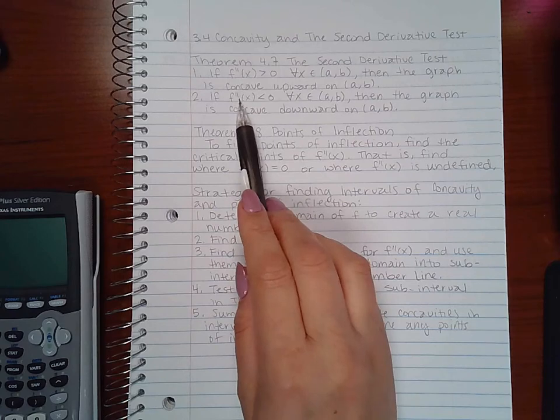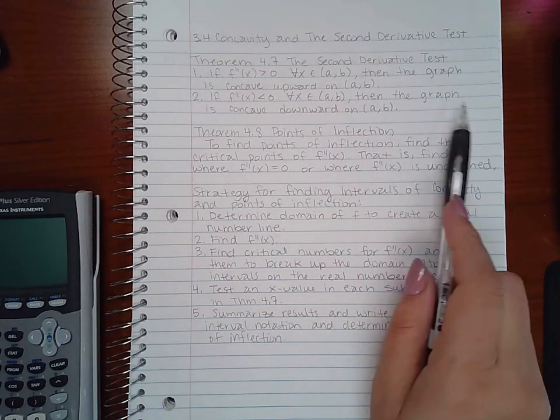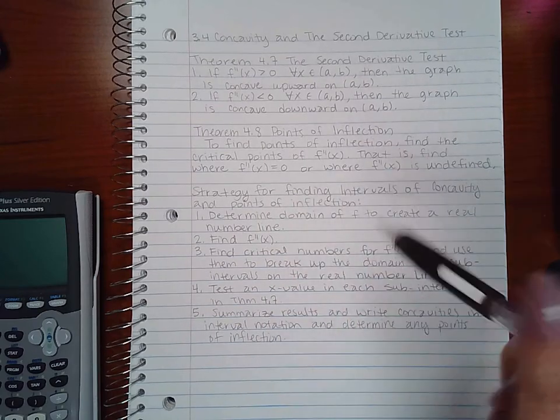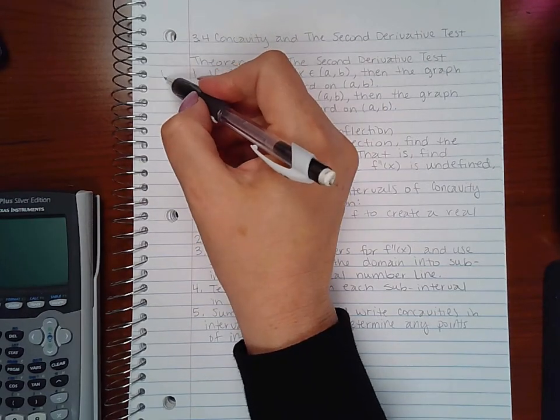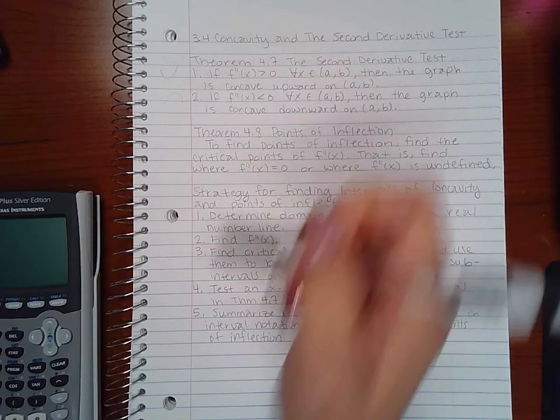If f double prime of x is less than 0 for all x in the interval, then the graph is concave downward. Concave upward is like a regular parabola. Concave downward is like a downward parabola.